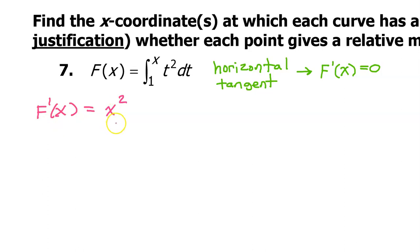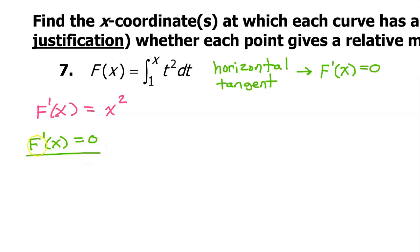So there's your derivative right there. To find the location of a horizontal tangent line, we set the derivative equal to zero. If we set x squared equal to zero, we can immediately see that x equals zero.